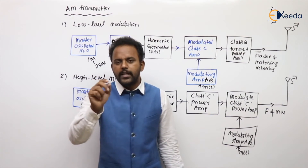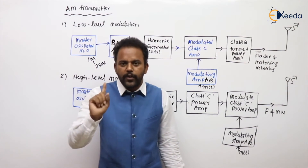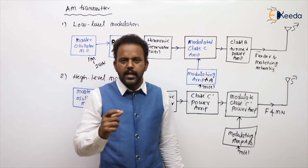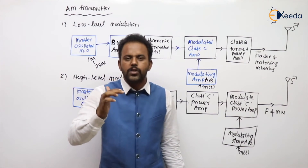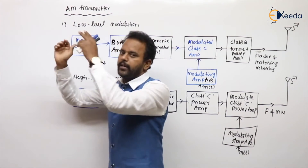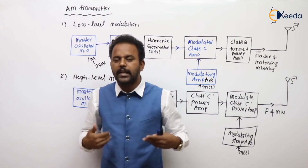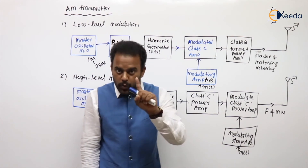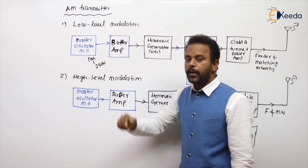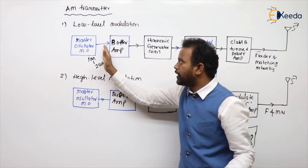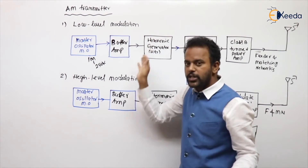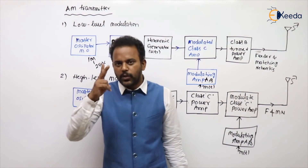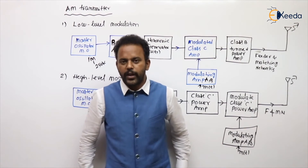The second reason is frequency scintillation — a sudden change in the master oscillator frequency due to the loading effect. A sudden change in load current causes the master oscillator frequency to vary suddenly. To avoid this, we use buffer amplifiers, which have high input impedance so that any load variation does not affect the master oscillator, isolating it from the rest of the circuit.